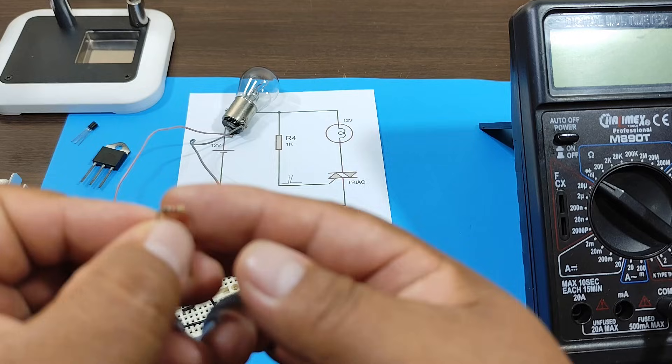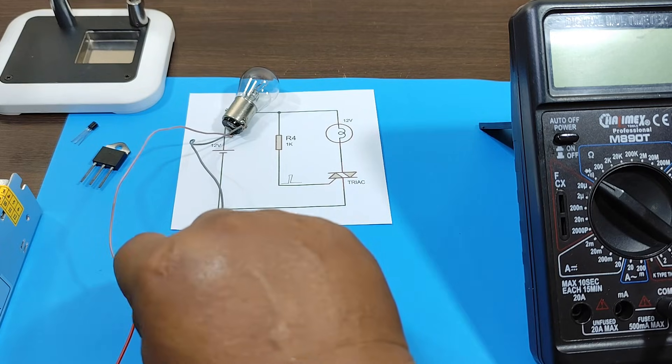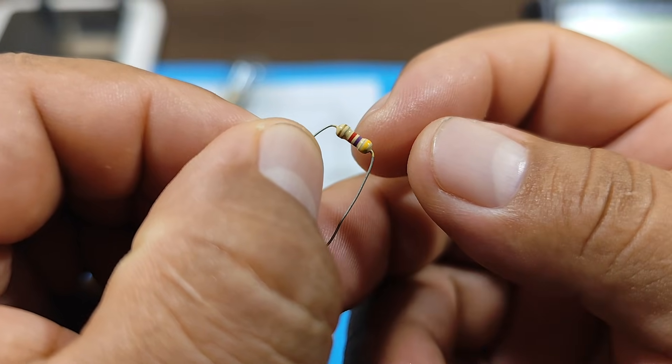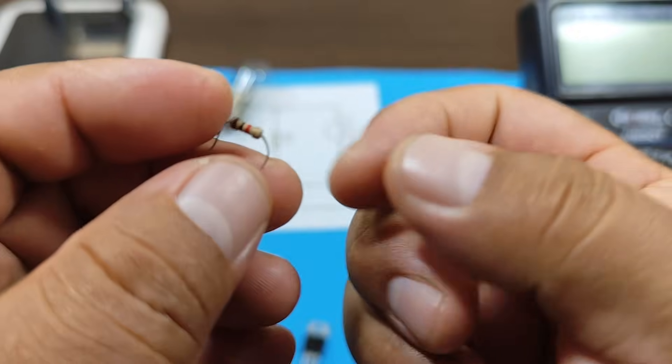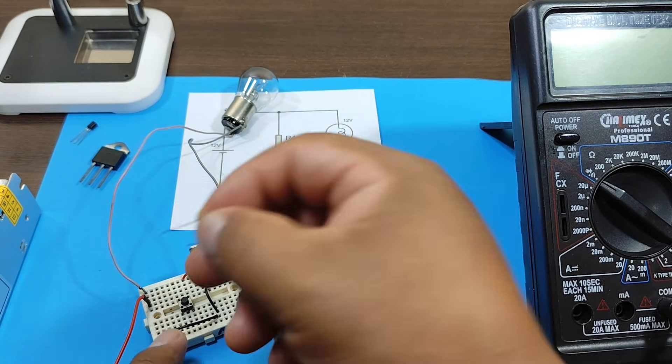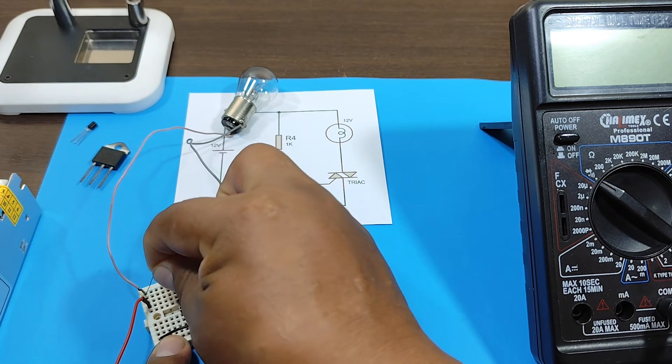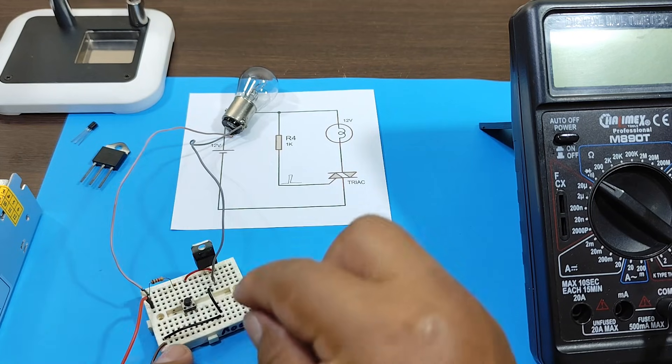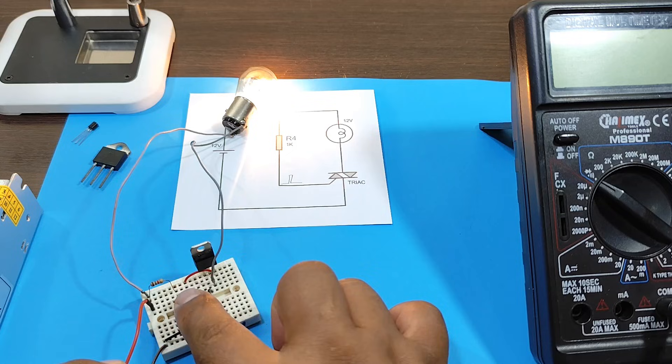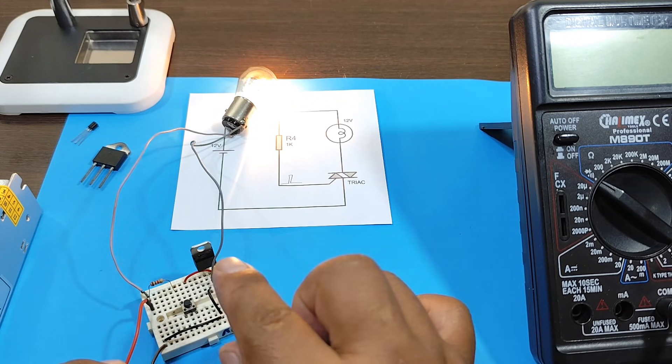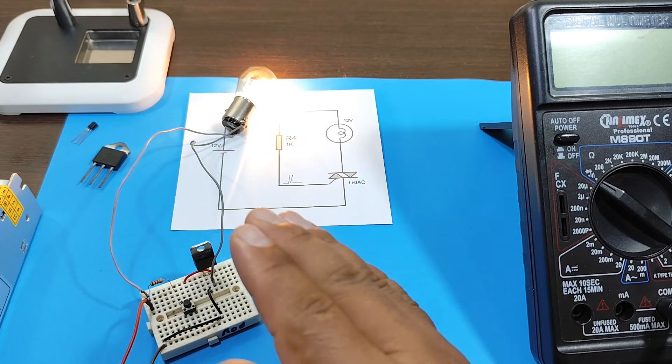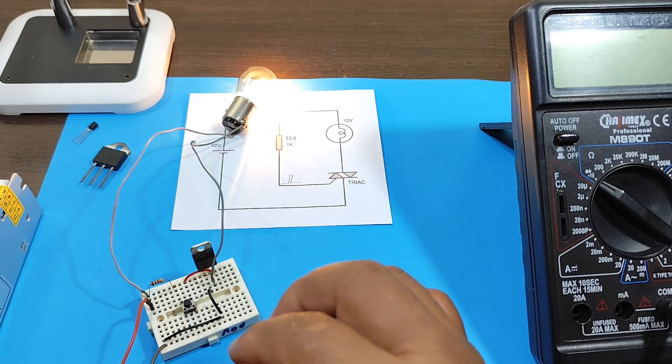For that, we have to change the resistor. We have a 4.7 kOhm resistor, and we're going to replace it with a 1 kOhm resistor. This will supply us with a current of approximately 12 mA. We press. And as you can see, the triac is now working. Therefore, some triacs require more or less current at their gate to function.